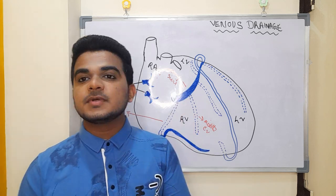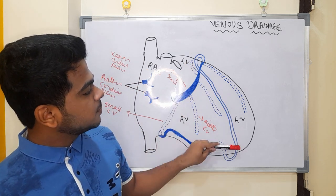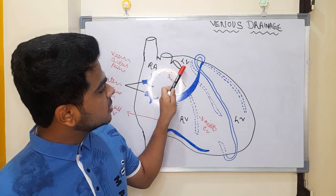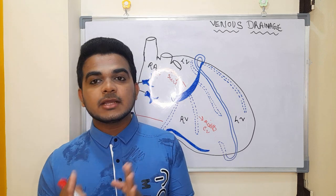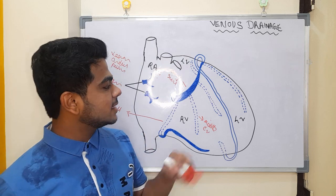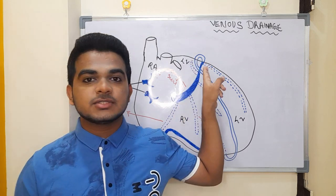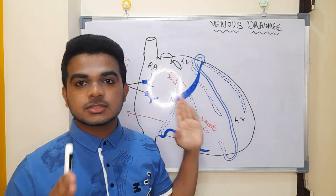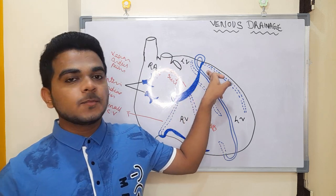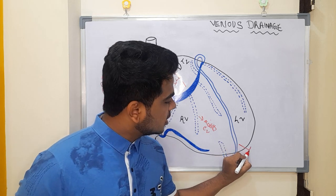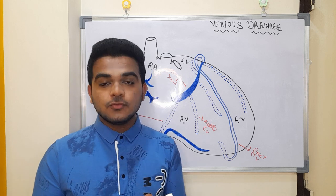The great cardiac vein is not present posteriorly — it is present anteriorly on the surface of the left ventricle. The left coronary artery runs from the interventricular groove along the surface of the left ventricle with its diagonal branches, and the deoxygenated blood from these is collected by the great cardiac vein. The circumflex artery also drains deoxygenated blood into the great cardiac vein. The great cardiac vein then goes posteriorly and drains into the left portion of the coronary sinus.